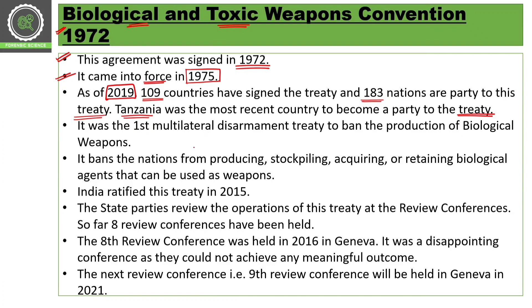It was the first multilateral treaty to ban the production of biological weapons. The convention prohibits countries from producing, stockpiling, acquiring, and retaining biological agents that can be used as weapons. All such possible forms of biological agents wherever they could be used as a weapon are covered under this treaty.